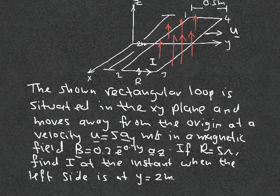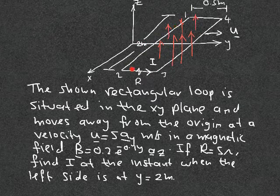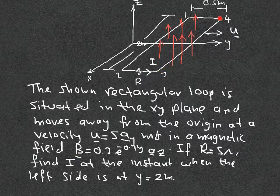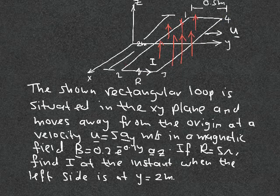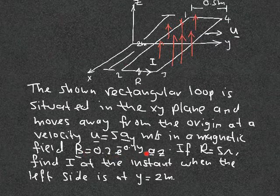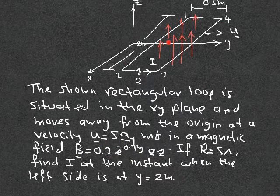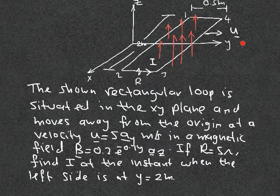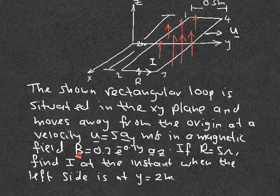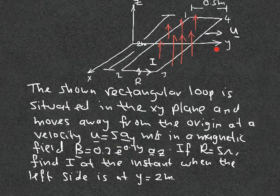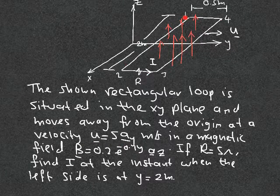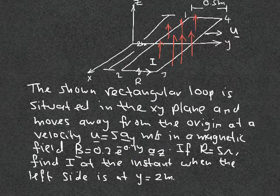The magnetic field B going through the loop creates a flux. The flux is the integral of B dot dS over the surface — dS is dx dy in the z direction. Because B is decreasing in the y direction, as the loop moves forward in the y direction the flux, the integral of B dot dS, is actually getting weaker with time.